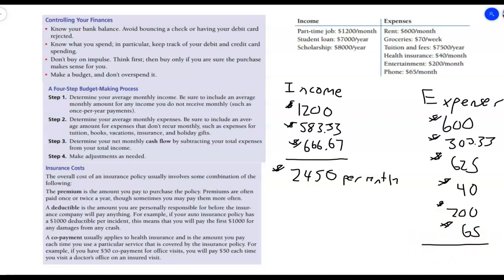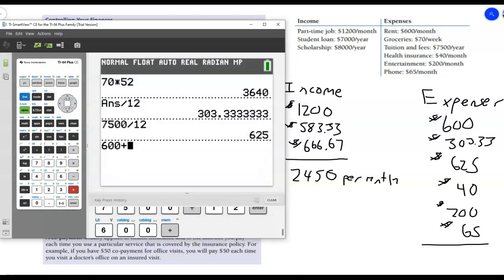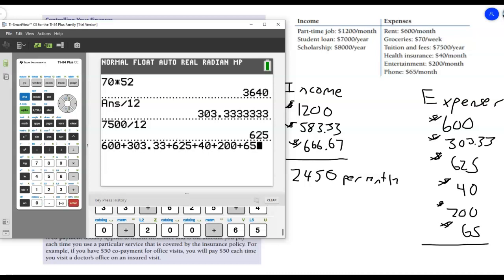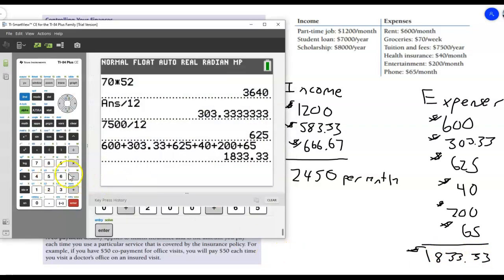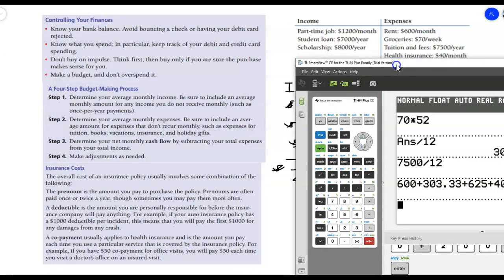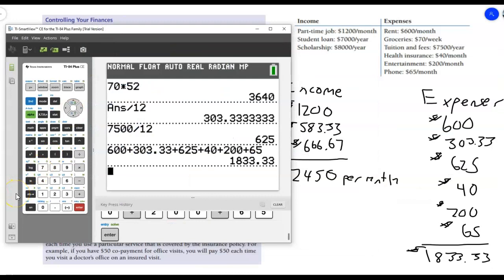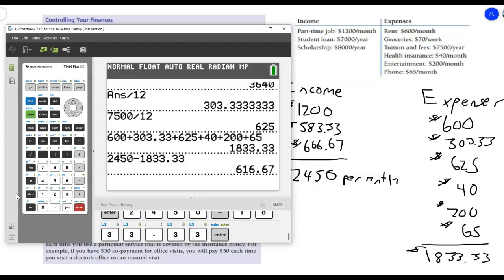So we're going to add all those up together. So I have $600 plus $303.33 plus $625 plus $40 plus $200 plus $65. And I get $1,833.33. So let's see what my monthly cash flow is. $2,450 minus $1,833.33. And it's a positive $616.67. So this is how much I have beyond my monthly expenses.